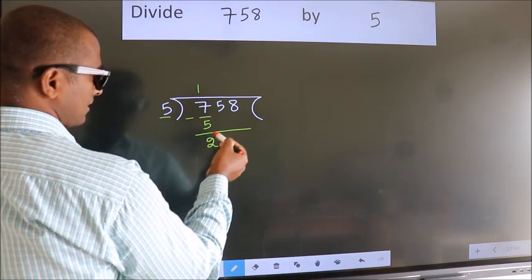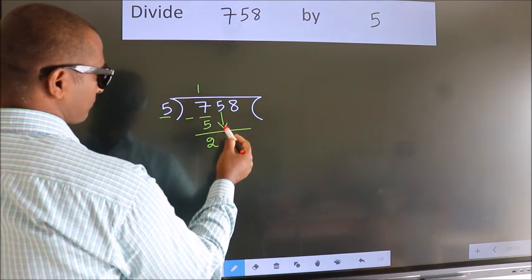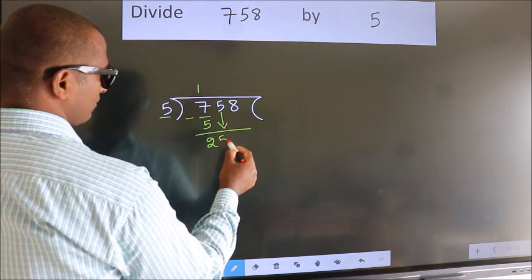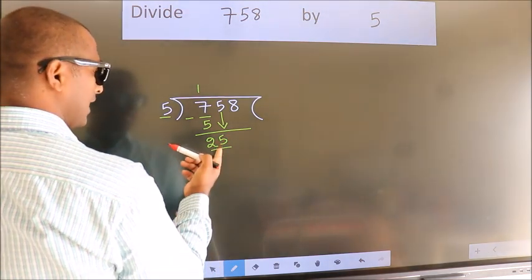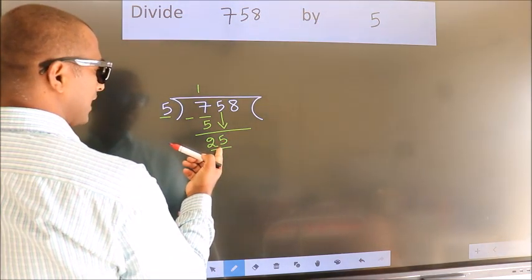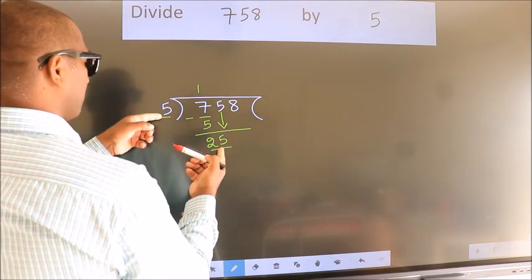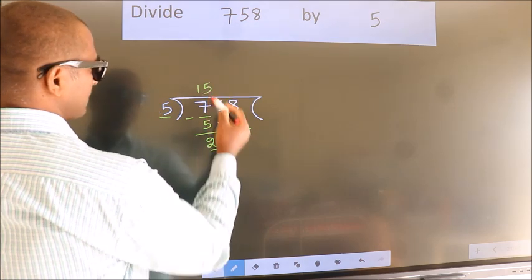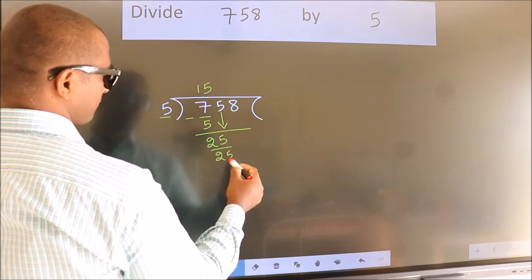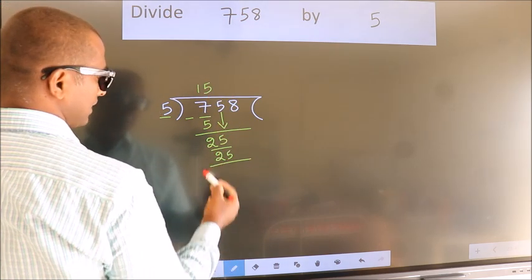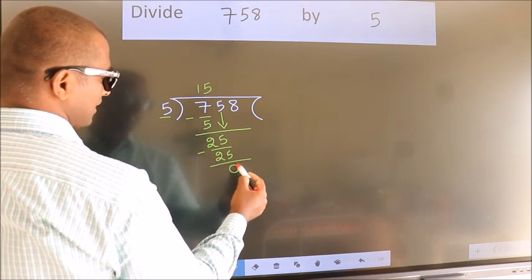After this, bring down the beside number. So, 5 down — we get 25. When do we get 25 in the 5 table? 5 fives are 25. Now we subtract. We get 0.